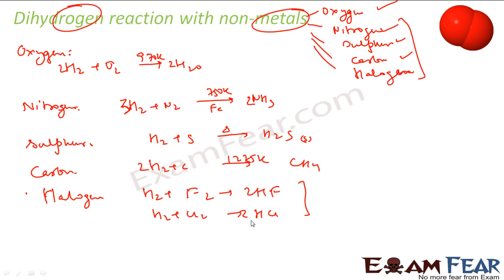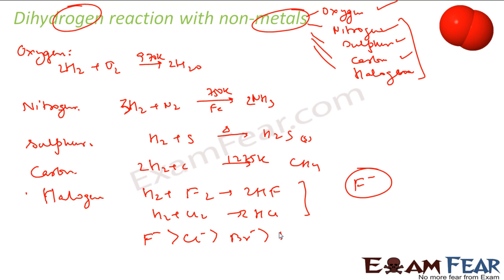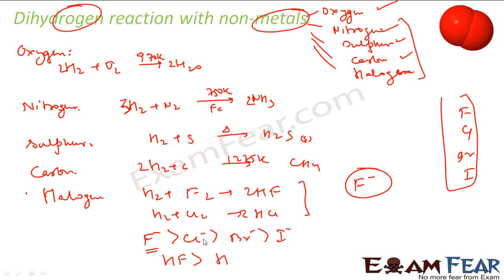Looking at the reactivity series of halogens, fluorine has the greatest tendency to form F⁻, more than Cl⁻, then Br⁻, then I⁻. So the products are HF, HCl, HBr, and HI respectively. The reaction of H₂ with F₂ is more vigorous than the reaction of hydrogen with iodine — the reaction H₂ + F₂ is more favorable than H₂ + I₂.